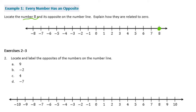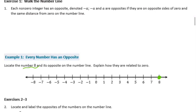So the opposite, as described up here, they're opposites if they're on opposite sides of 0. So here's 0. 8 is 8 units to the right. So the opposite would be 8 units to the left, or negative 8. So those two are opposites.